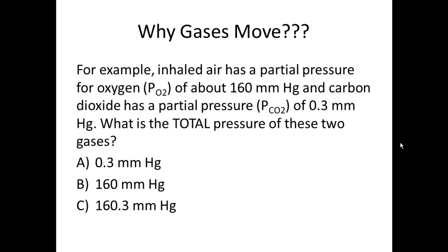Let's try another question. For example, inhaled air has a partial pressure for oxygen, and this is the symbol. You put a P representing partial pressure, and then the gas you're talking about, O2, oxygen, of about 160 millimeters of mercury. And carbon dioxide has a partial pressure of PCO2 of 0.3 millimeters of mercury. What is the total pressure of these two gases? Well, partial, meaning part. You have two parts, a part of oxygen and a part of CO2. Add the two parts together, and you end up with 160.3 millimeters of mercury. Good job.